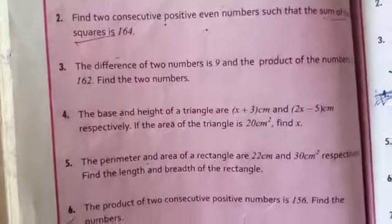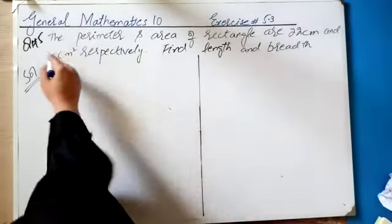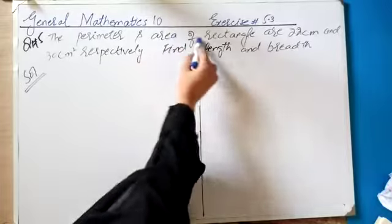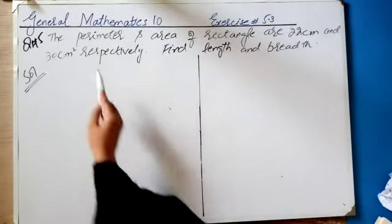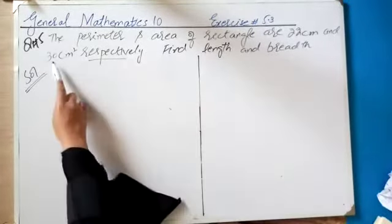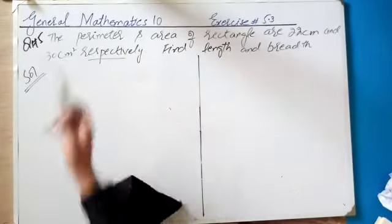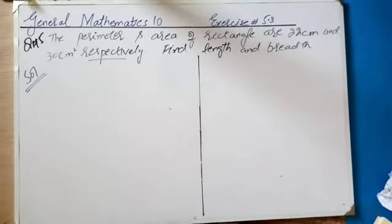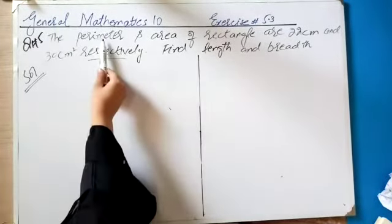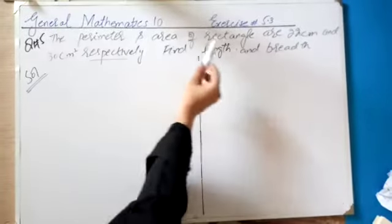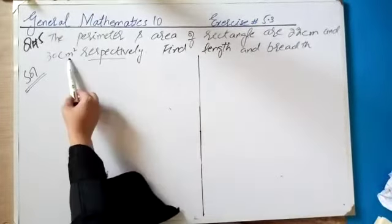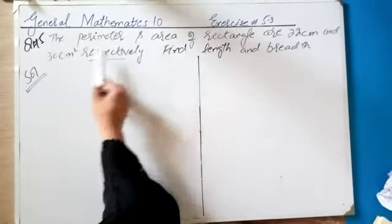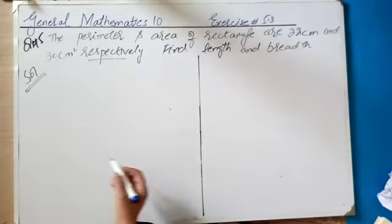Let's start. The perimeter and area of the rectangle are given respectively as 22 cm and 30 cm square. This means the perimeter of rectangle is 22 cm and area is 30 cm square.